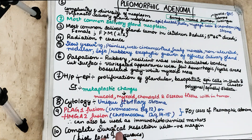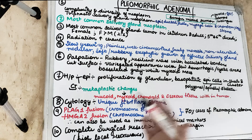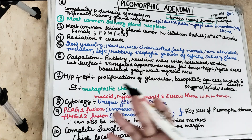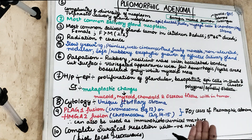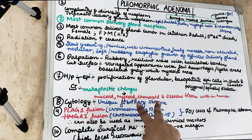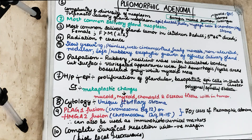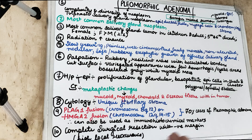Pleomorphic adenoma is basically a tumor of salivary gland. As the name suggests, OMA means that this is a benign tumor. Pleomorphic means there is a diversity of the neoplasm. We will be seeing a triphasic salivary gland neoplasm — epithelial cells, myoepithelial cells, and the chondromyxoid stroma. In the connective tissue, we are going to see mucoid, myxoid, chondroid, and osseous tissue within the tumor. So adenoma refers to a benign mixed salivary gland tumor.